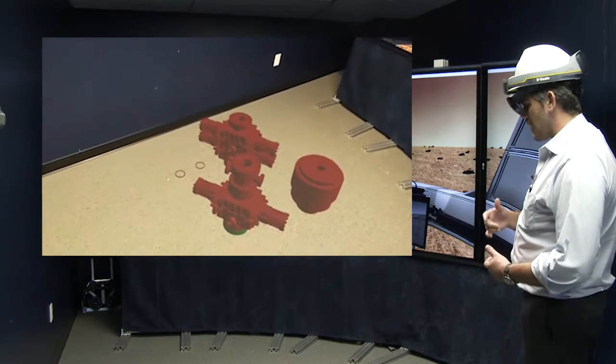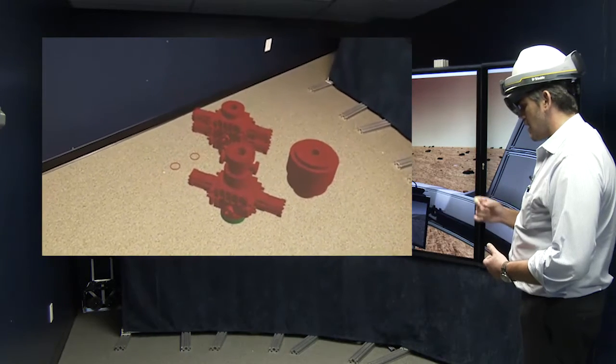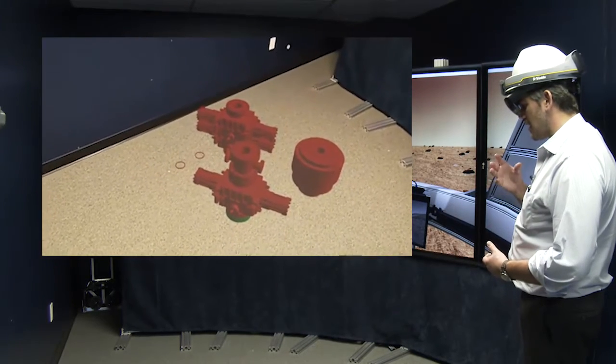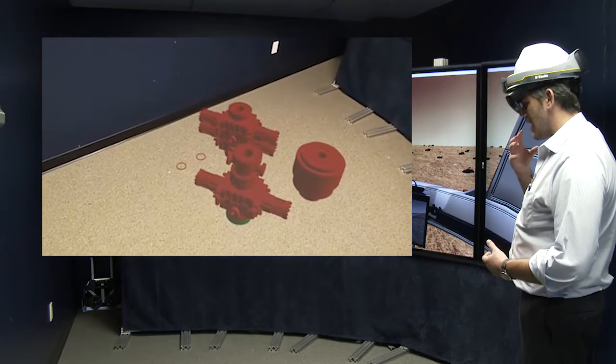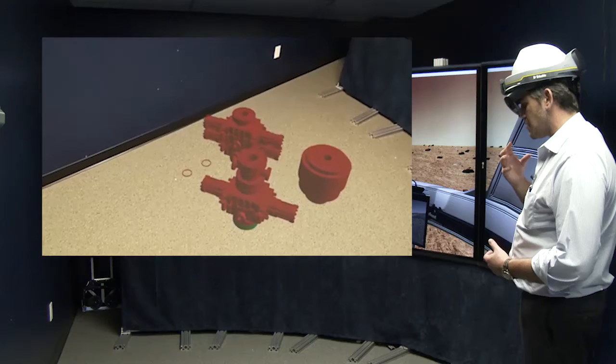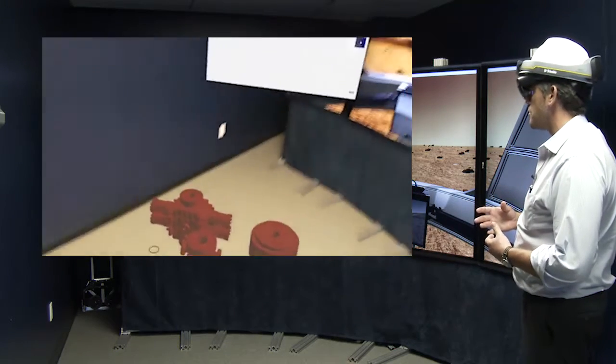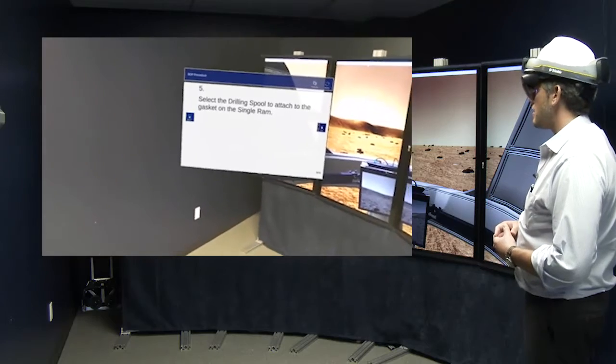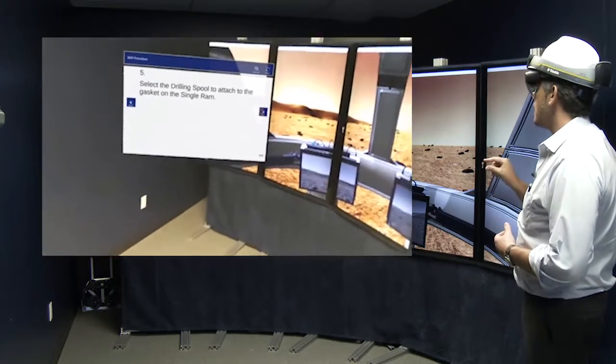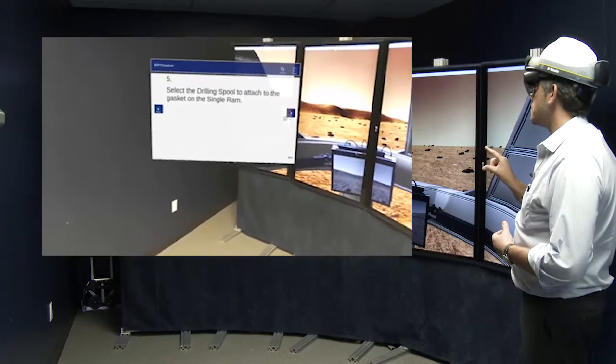We actually have the capability to show exactly where that pressure torque is when it's in the perfect range and display it to the user who's doing that in an AR environment and actually be able to report all of those numbers and that data to ensure the integrity of the bolt, that it's not over torqued and it's not under torqued. So now that I've got the drilling spool attached, I'm going to go ahead and move to the next procedure.